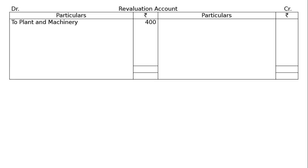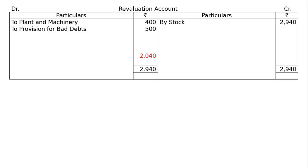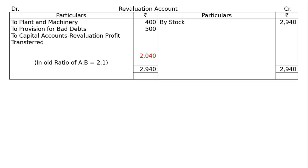Revaluation account: Plant and machinery — reduction of Rs.400, a decrease in value is a loss, hence debited to revaluation account. Stock Rs.2,940 — an increase in asset is a profit, hence credited to revaluation account. Provision for doubtful debts Rs.500 — being an increase in liability, debited to revaluation account. Credit side total is Rs.2,940; debit side gap is Rs.2,040, which is the revaluation profit transferred in old ratio 2:1 — A gets Rs.1,360 (2040 × 2/3), B gets Rs.680 (2040 × 1/3).